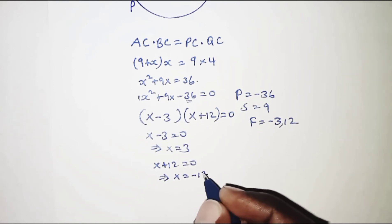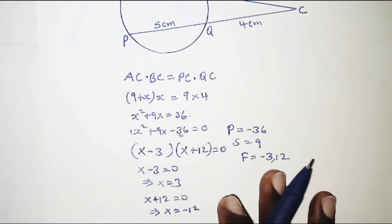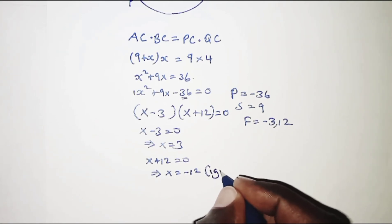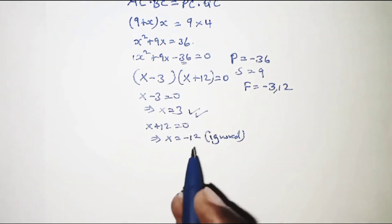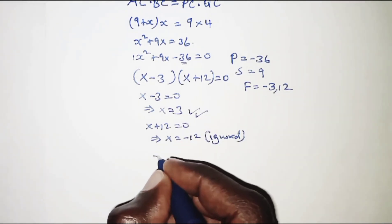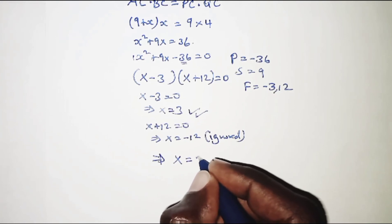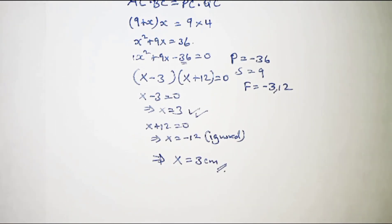This implies x = -12. Now, remember x is a length, BC, so it cannot be a negative number. Therefore, we ignore the negative value and go with the positive value of x. This means x = 3 cm.